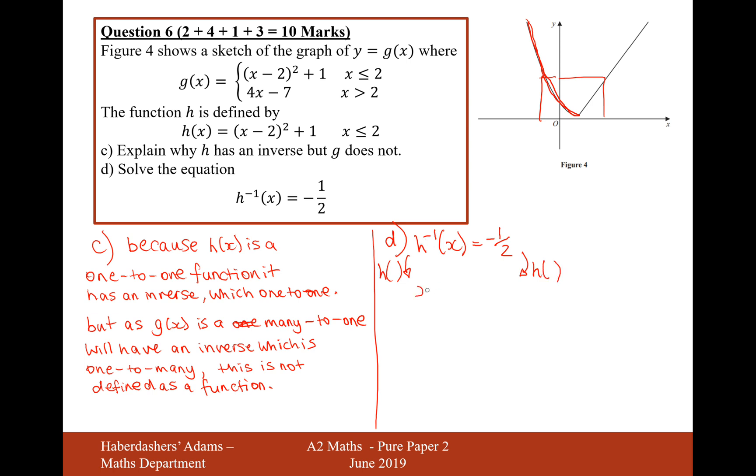h inverse will just lead us back to x, and then I can do h of minus a half. And all I now need to do is put minus a half into the h function to work out what x is, because that's the aim of this question, work out what x is. So putting minus a half into the function will be minus a half minus 2 squared plus 1. That's going to be two and a half, that's 5 over 2. So that's going to be 25 over 4 plus 4 over 4 for the one on the end there. So that's going to be x equals 29 over 4.